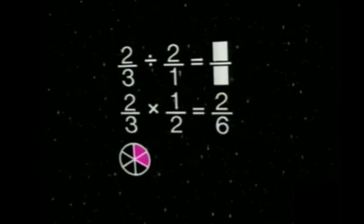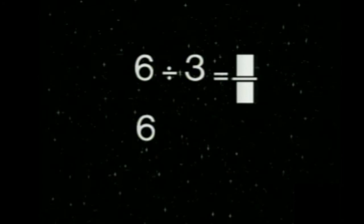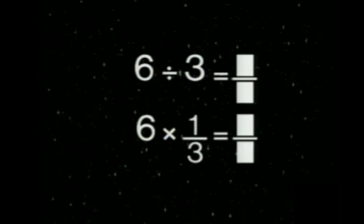So two thirds divided by two over one gives the same value as two thirds times one over two. Here's six divided by three — that's the same as six times one third.